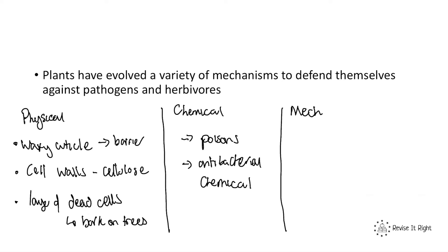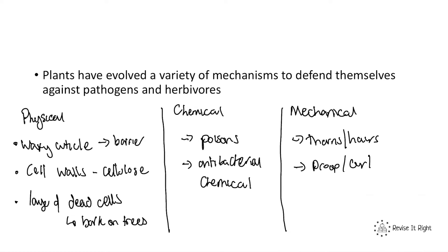Plants also have mechanical defences. Thorns or hairs make it uncomfortable for herbivores or animals to eat the plant. Some plants can droop or curl — this prevents herbivores from eating the plant by making it look unwell and dead, so the animal will avoid it. Finally, some plants can mimic other plants or organisms — for example mimicking a dead plant — so again herbivores will not eat it. These are all ways that plants have adapted to protect against disease and predation.